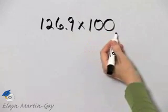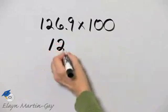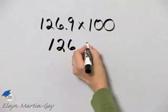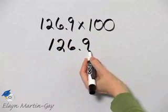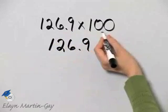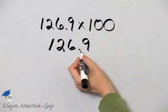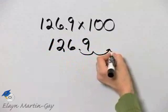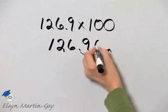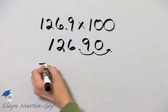Multiplying by a power of 10 such as that has the effect on our other number — in this case 126 and 9 tenths — of moving the decimal point two places to the right, because there are two zeros here, or because it's 100. So what is our answer?